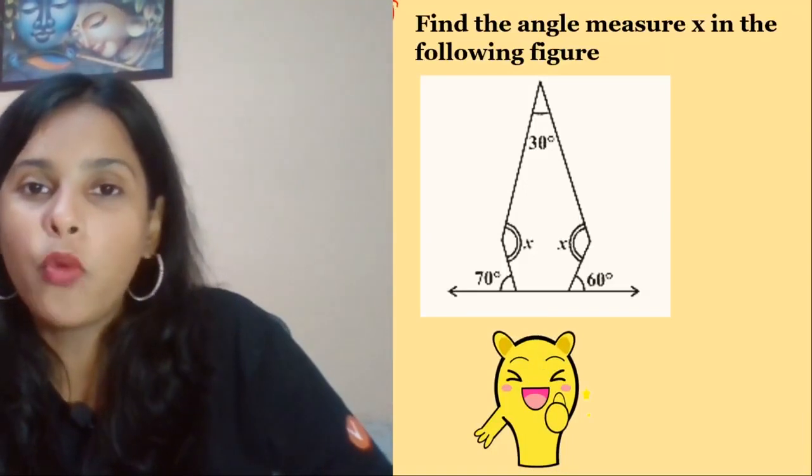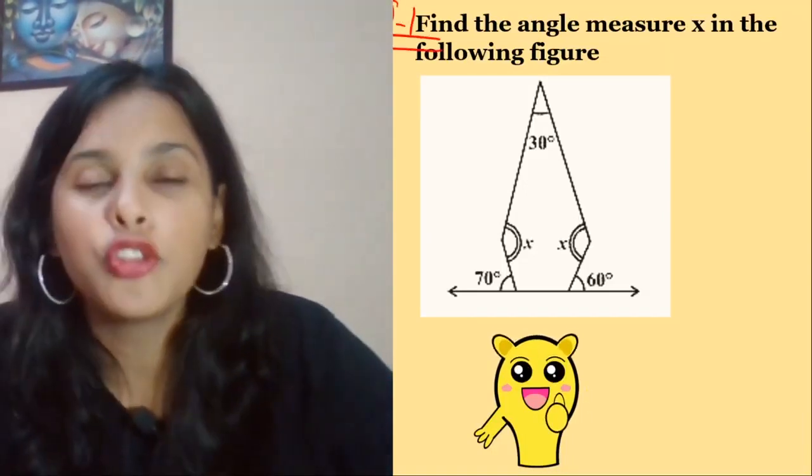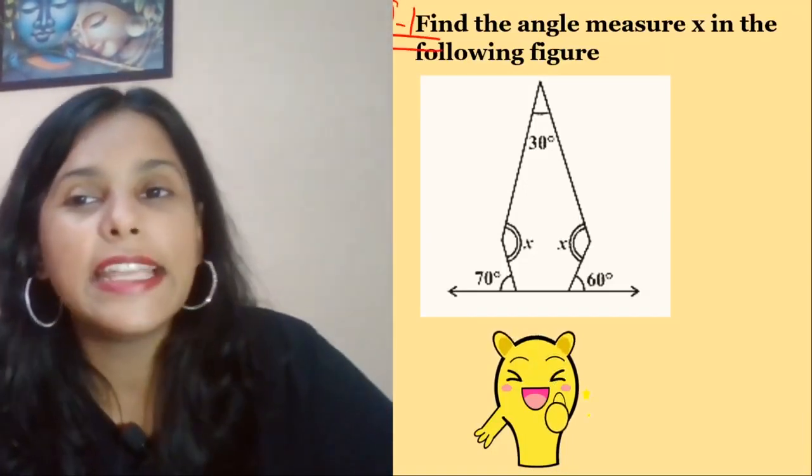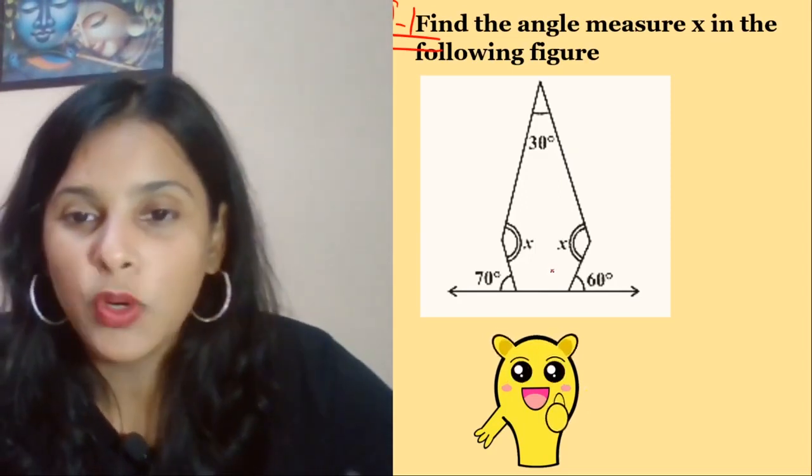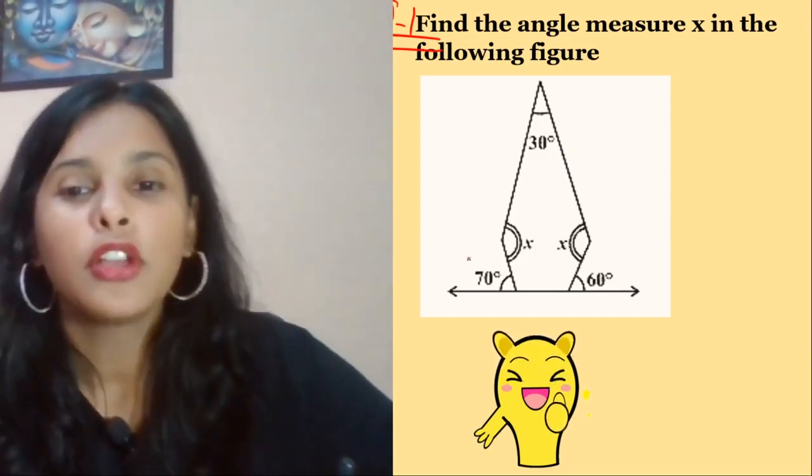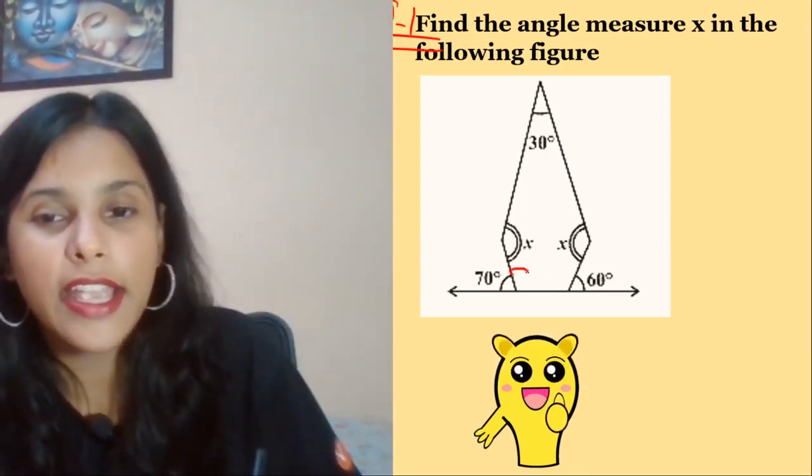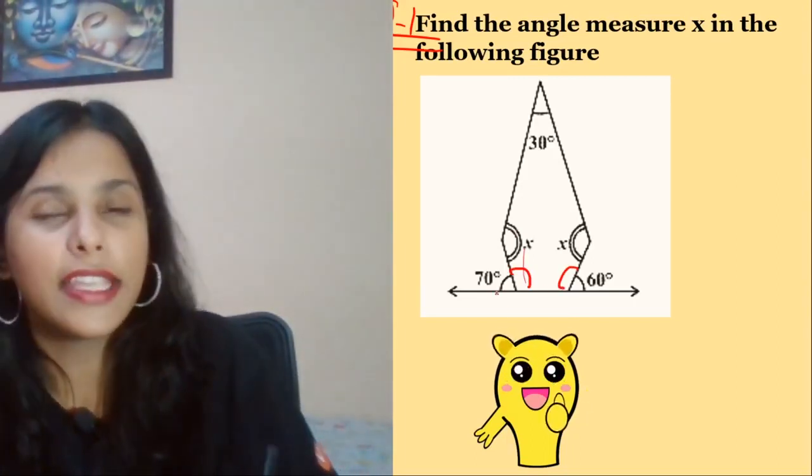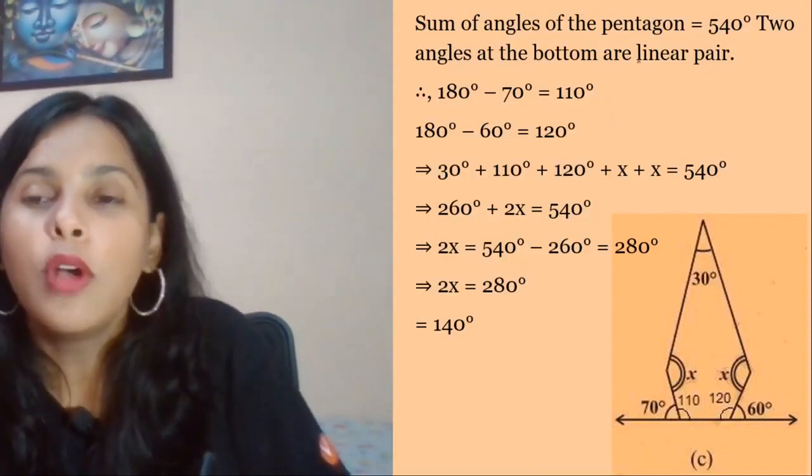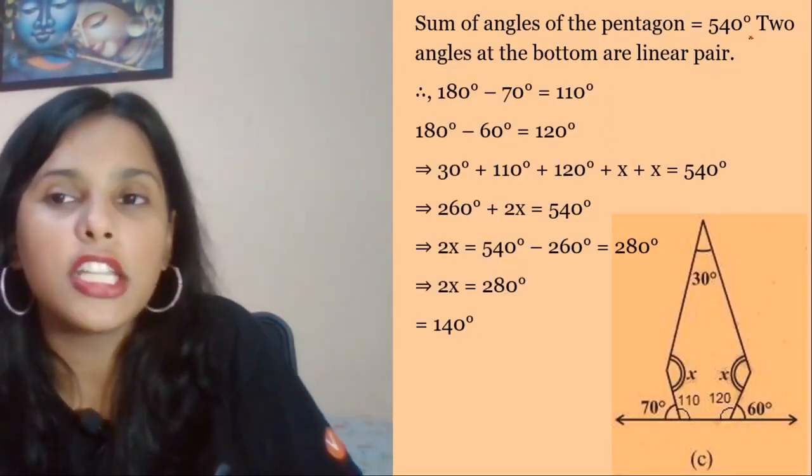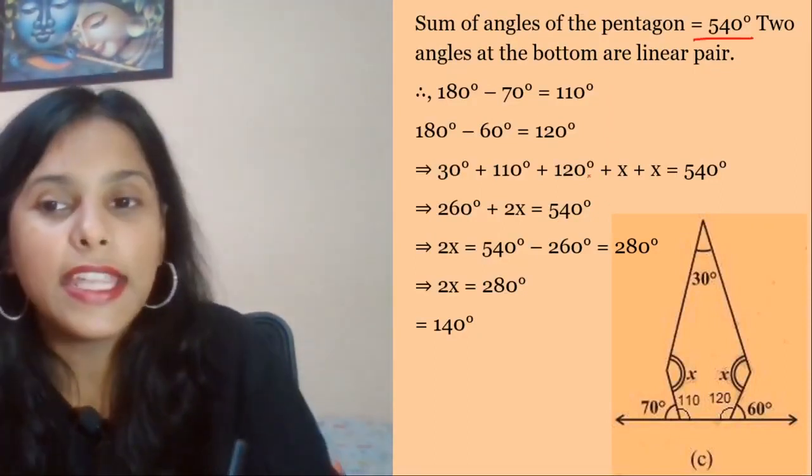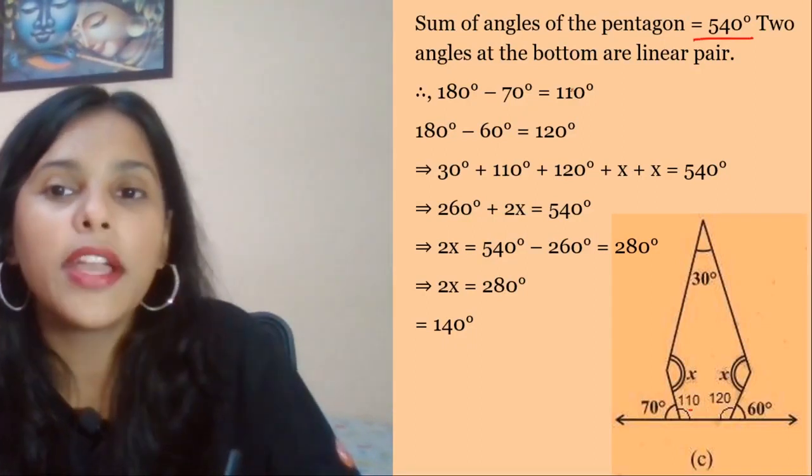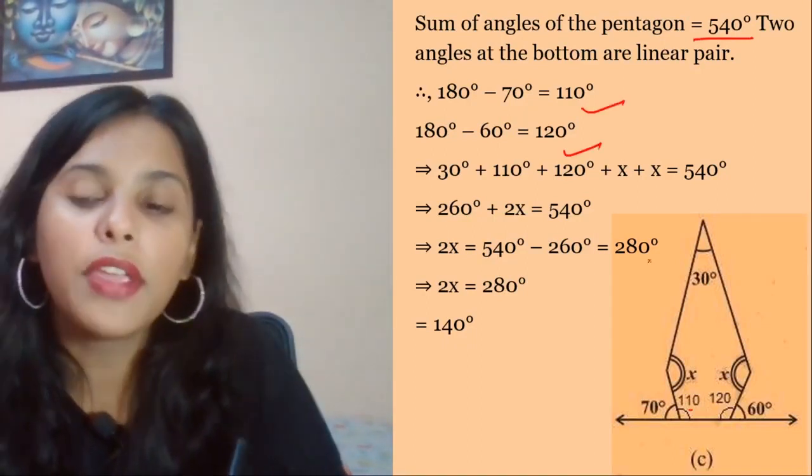Today we start from question number 1. You have to find the angle measure X in the following figure. We will start by finding this angle, then we will use the pentagon sum. We know that sum of pentagon angles is 540 degrees.